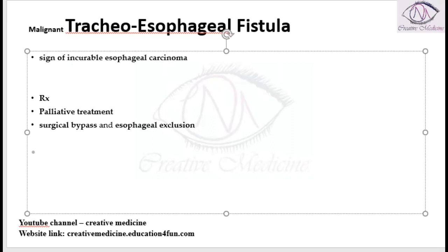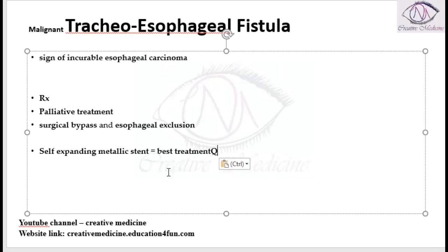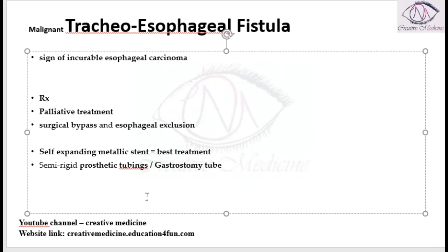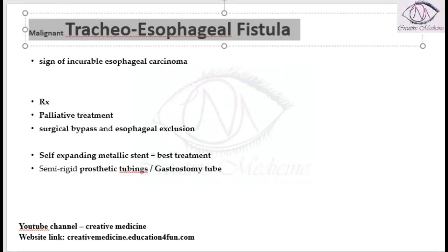For malignant tracheoesophageal fistula, self-expanding metallic stents are the best treatment available. Semi-rigid prosthetic tubings like gastrostomy tubes can also be used in these patients.